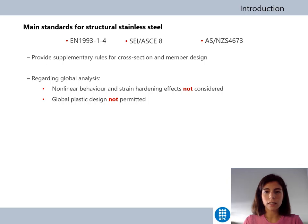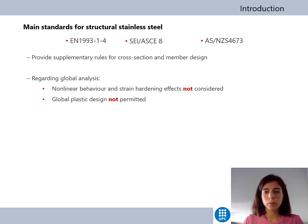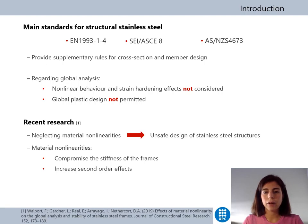Current standards for structural stainless steel, such as Eurocode 3 Part 1-4, are based on carbon steel standards and provide some supplementary rules for considering the material nonlinearities in the design of cross-sections and members. Regarding structural global analysis, the current Eurocode 3 Part 1-4 does not provide any supplementary rules to account for the effect of material nonlinearities and does not permit the use of global plastic analysis.